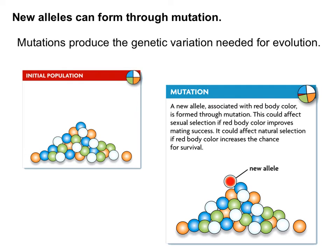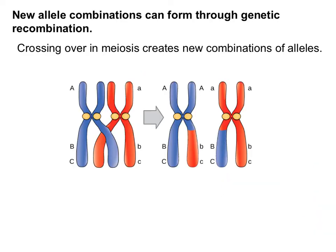Another way that populations can evolve is through mutations. A population can have certain alleles — like orange, blue, green, and white — but a mutation can occur and now a red allele can be present. This actually happens and is how many organisms have evolved. In humans, blue eye color actually started as a mutation, and now it is well into our gene pool. New allele combinations can also form through genetic recombination — crossing over during meiosis creates new combinations of alleles, which can change how alleles move through the gene pool in a population.